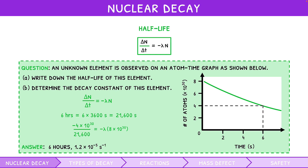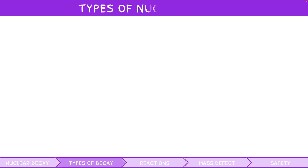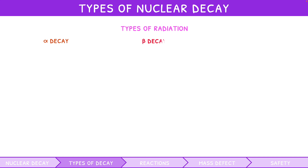Now that you know about the principles of nuclear decay and its quantification via half-life and decay constants, let's cover the three types of radiation: alpha, beta, and gamma decay. For each, you must memorize the equation, charge of decay, and penetration depth.